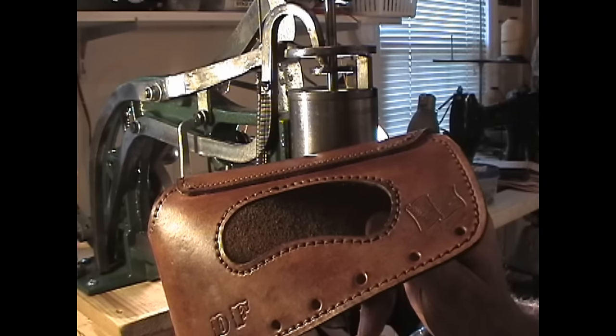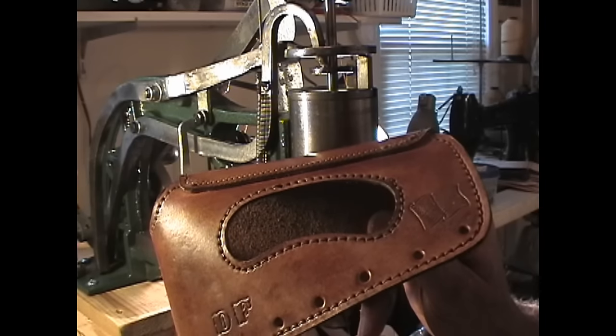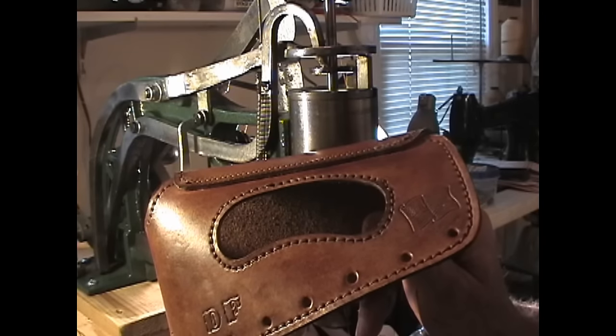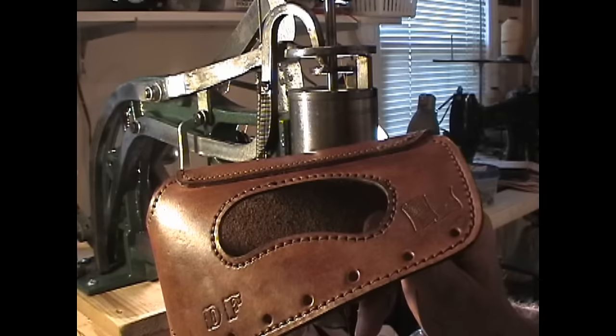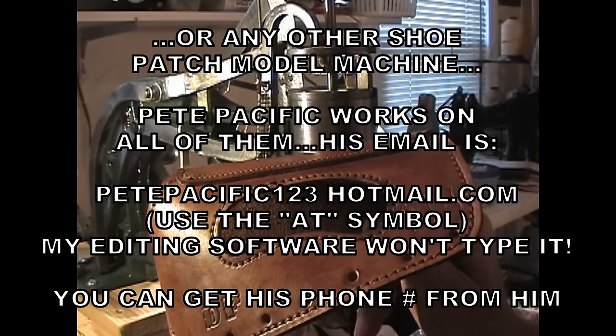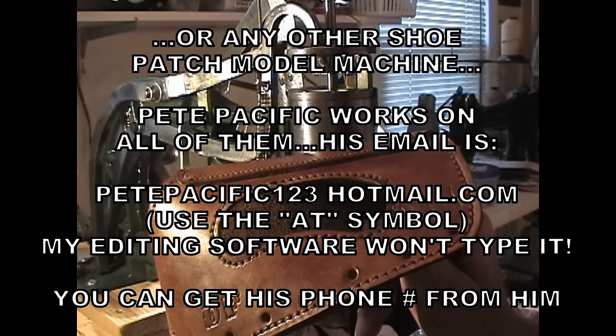So if you're looking to get a 29-4 and you get one, and you're having problems with it sewing consistently, properly, because she's worn out. Most 29-4 shoe cobbler machines are over 100 years old.